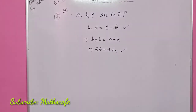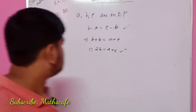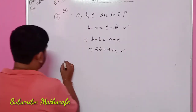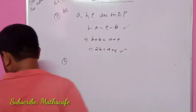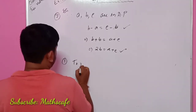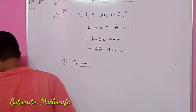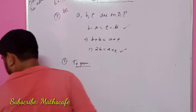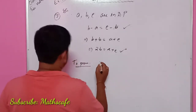So we can use this condition. So first we can prove: 1 by BC, 1 by CA, 1 by AB are in AP. So we can write here.